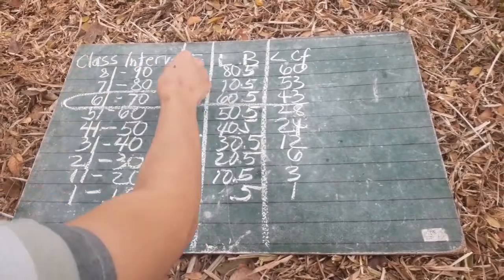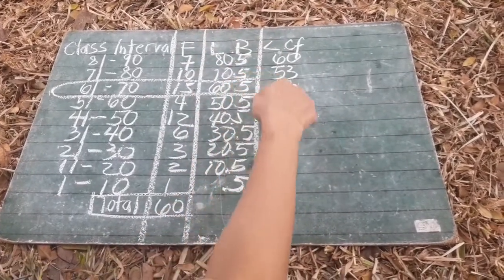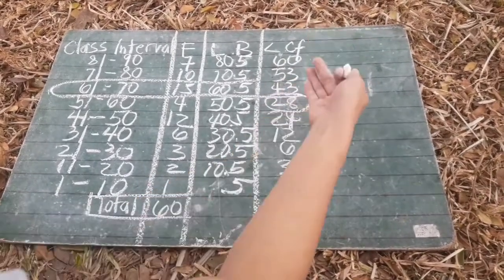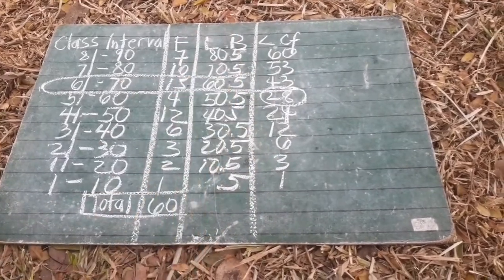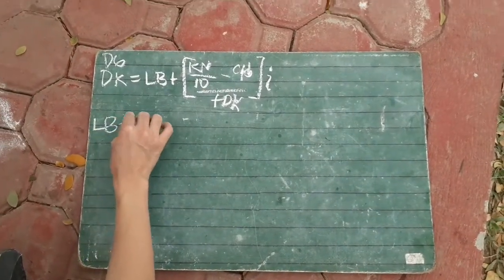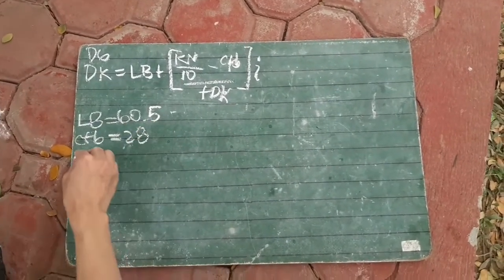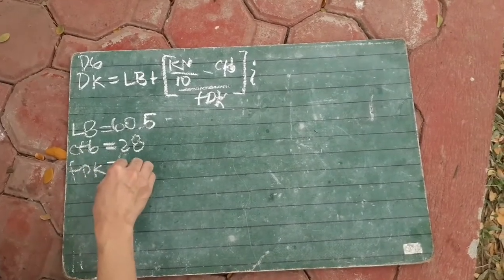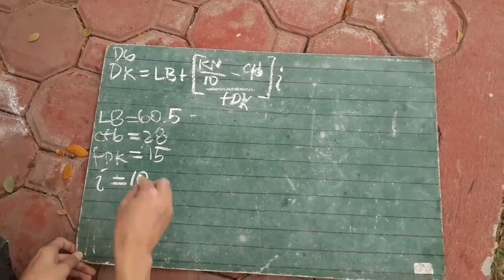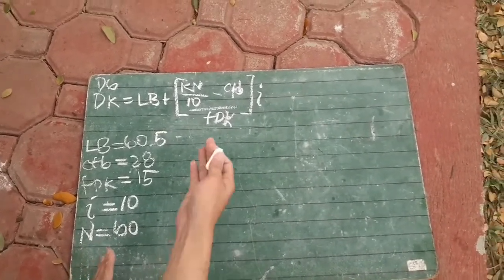So this is the line we use. When we identify that row, we go one step down to get the lower boundary. Our cumulative frequency before that class is 28. Our lower boundary is 60.5. And our frequency is 15. Now we know our given values: LB equals 60.5, CFB equals 28, FDK equals 15, interval I equals 10, and N or total frequency equals 60.